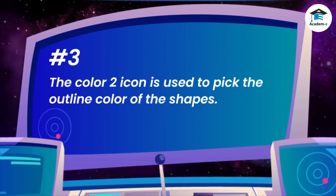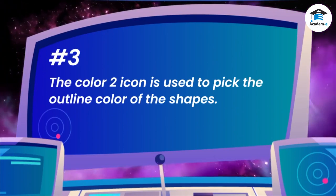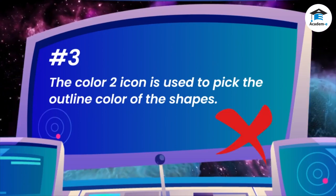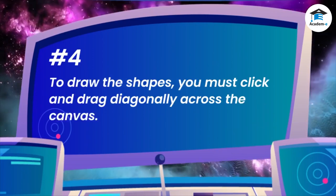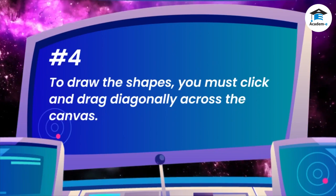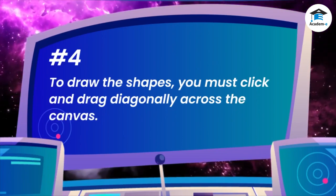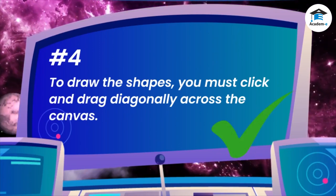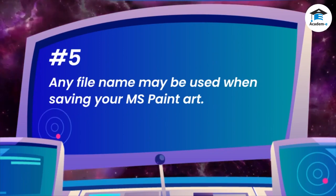3. The Color 2 icon is used to pick the outline color of the shapes. 4. To draw shapes, you must click and drag diagonally across the canvas. This statement is correct. 5. Any file name may be used when saving your MS Paint art.